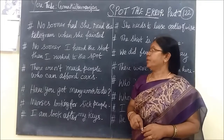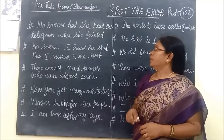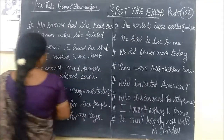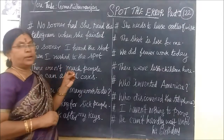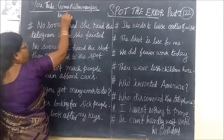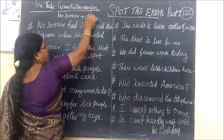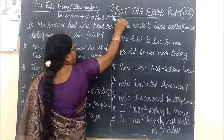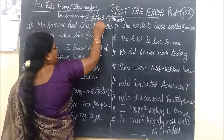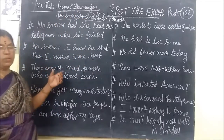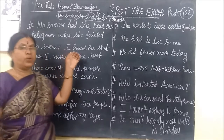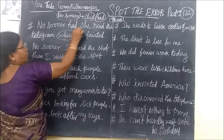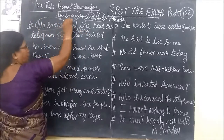We will see the first question: 'No sooner has she read the telegram when she waited.' Here, 'no sooner' comes at the beginning of the sentence and is followed immediately by 'did' or 'had.' The structure is: no sooner + did/had. And in the sentence you must use 'than,' not 'when.' So no sooner will come at the beginning, immediately followed by 'did' or 'had,' and in the sentence you find 'than.'